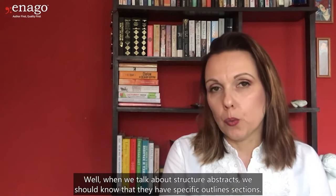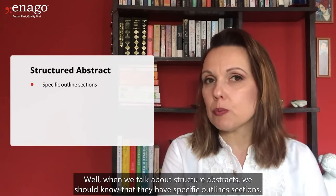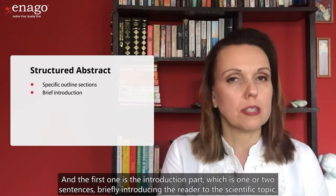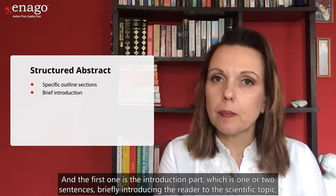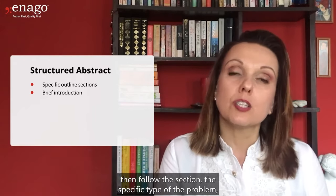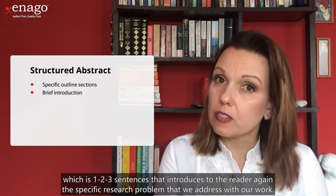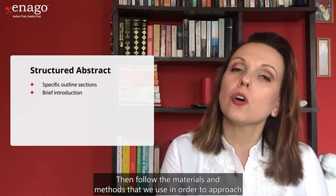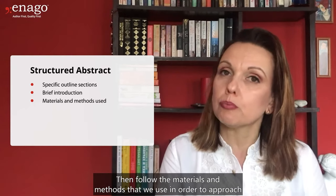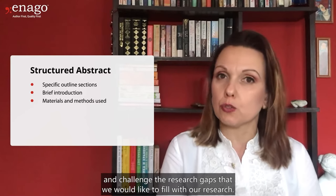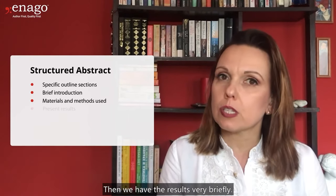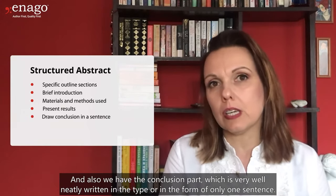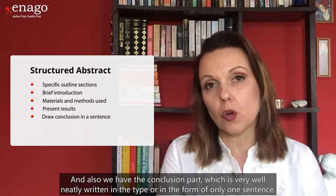When we talk about structured abstracts, they have specific outline sections. The first is the introduction — one or two sentences briefly introducing the reader to the scientific topic. Then follows the section on the specific problem — one, two, or three sentences introducing the reader to the specific research problem addressed. Then come materials and methods used to challenge the research gaps we want to fill. Then we have the results very briefly, and finally the conclusion, written neatly in the form of only one sentence.